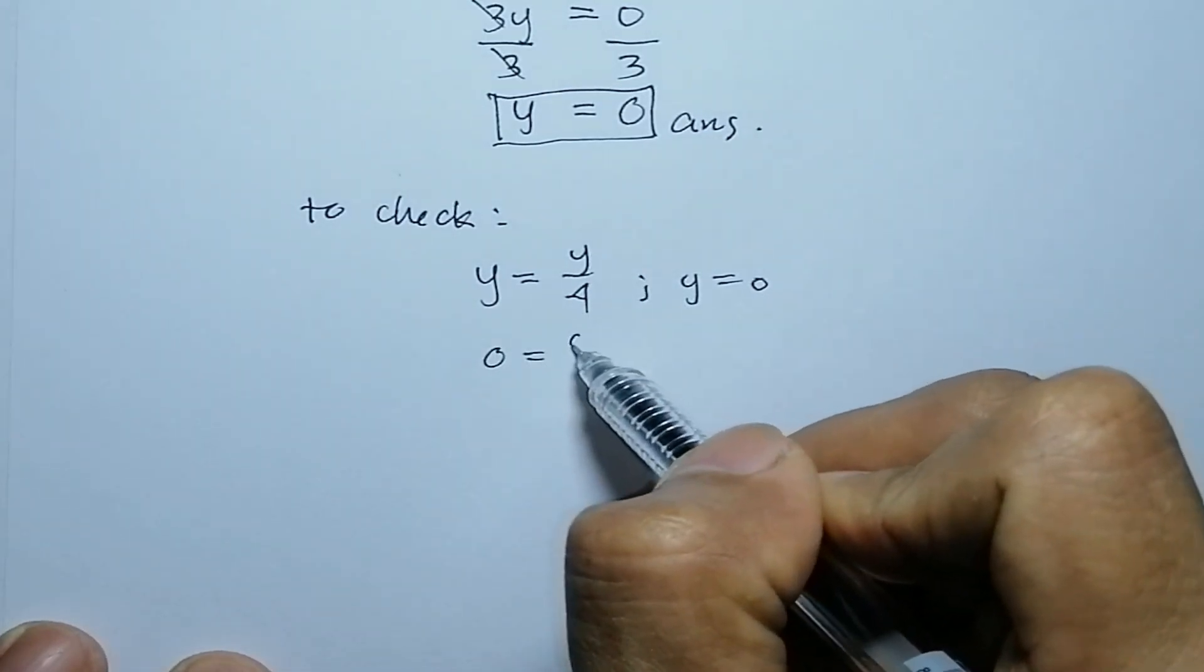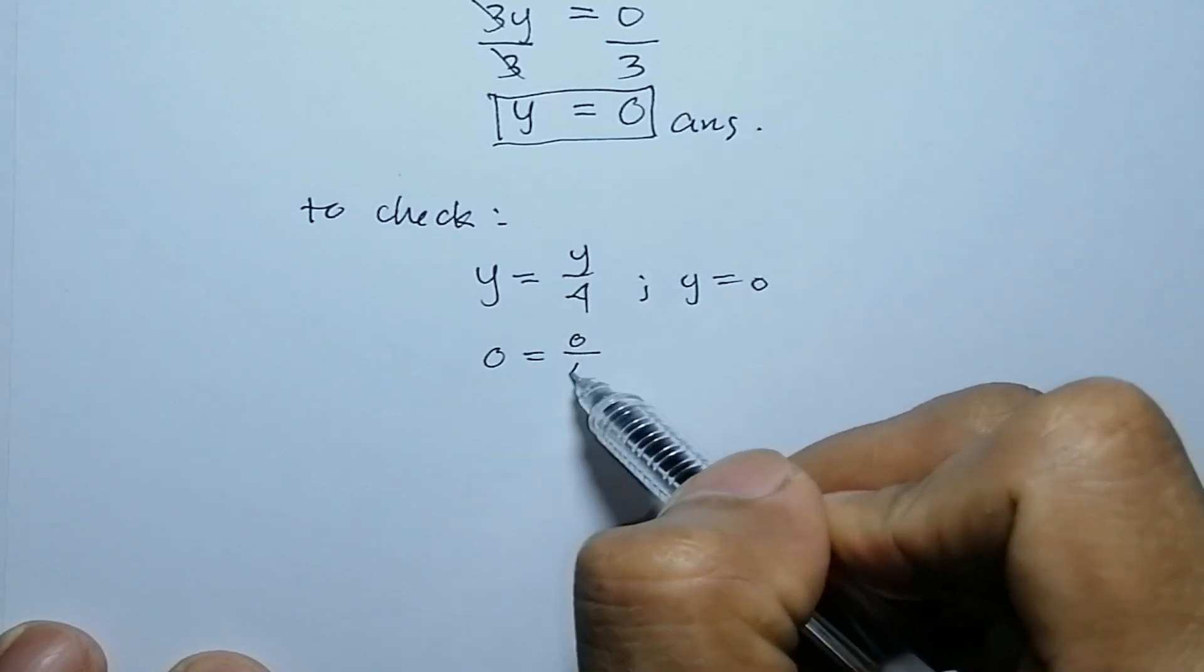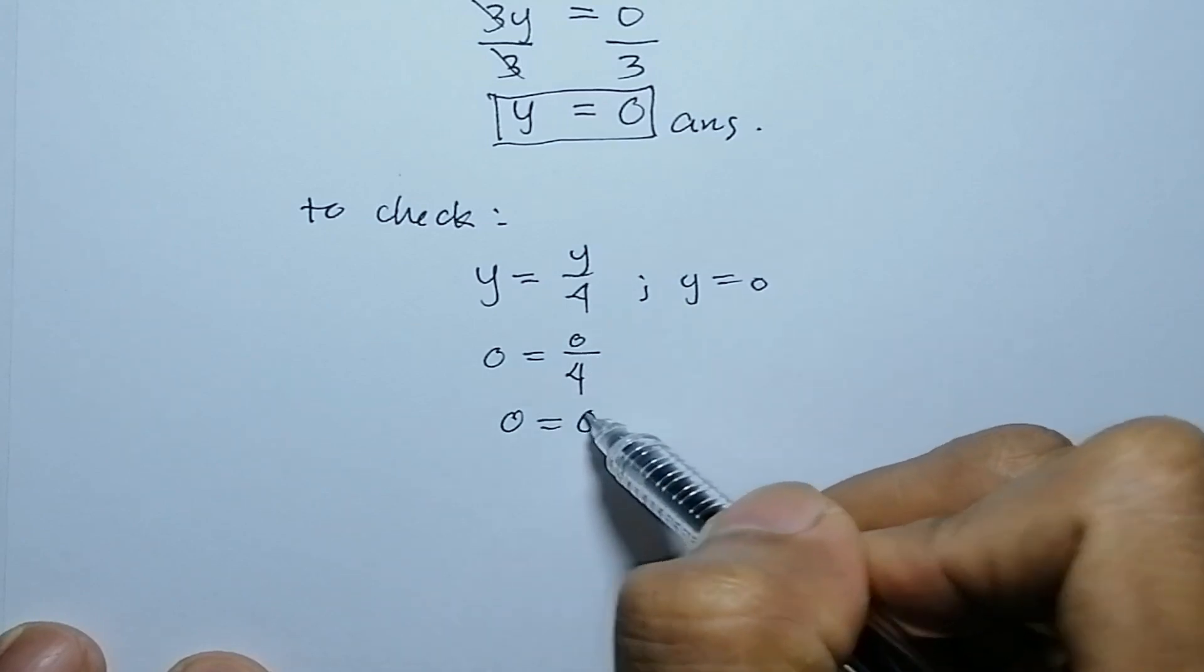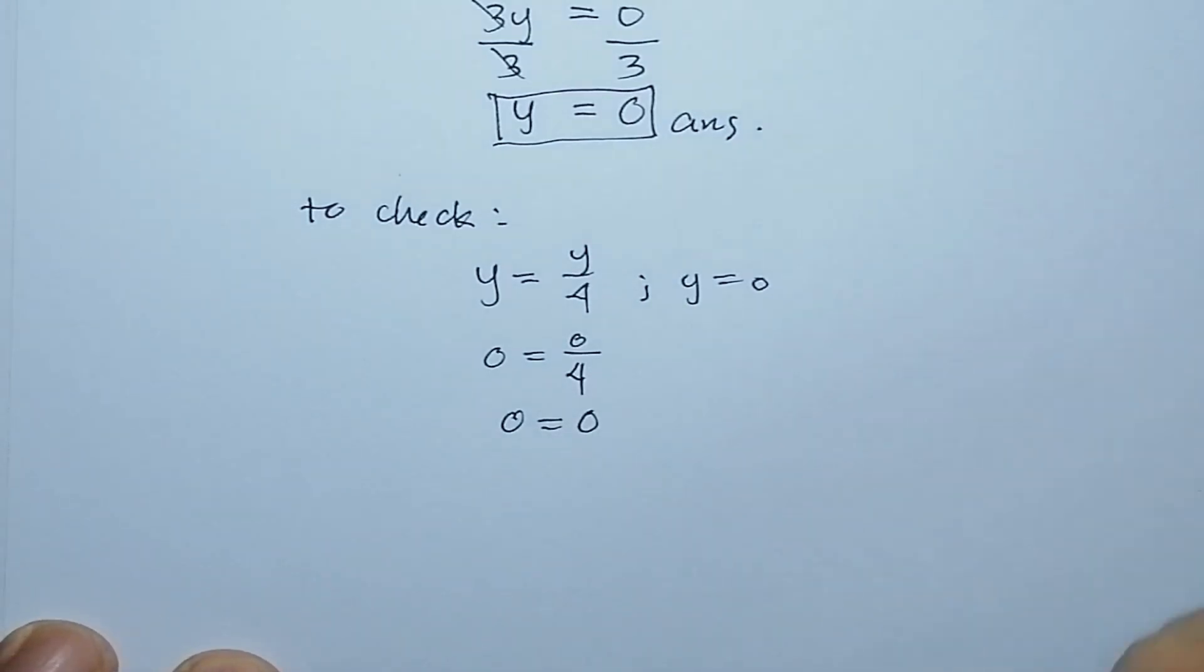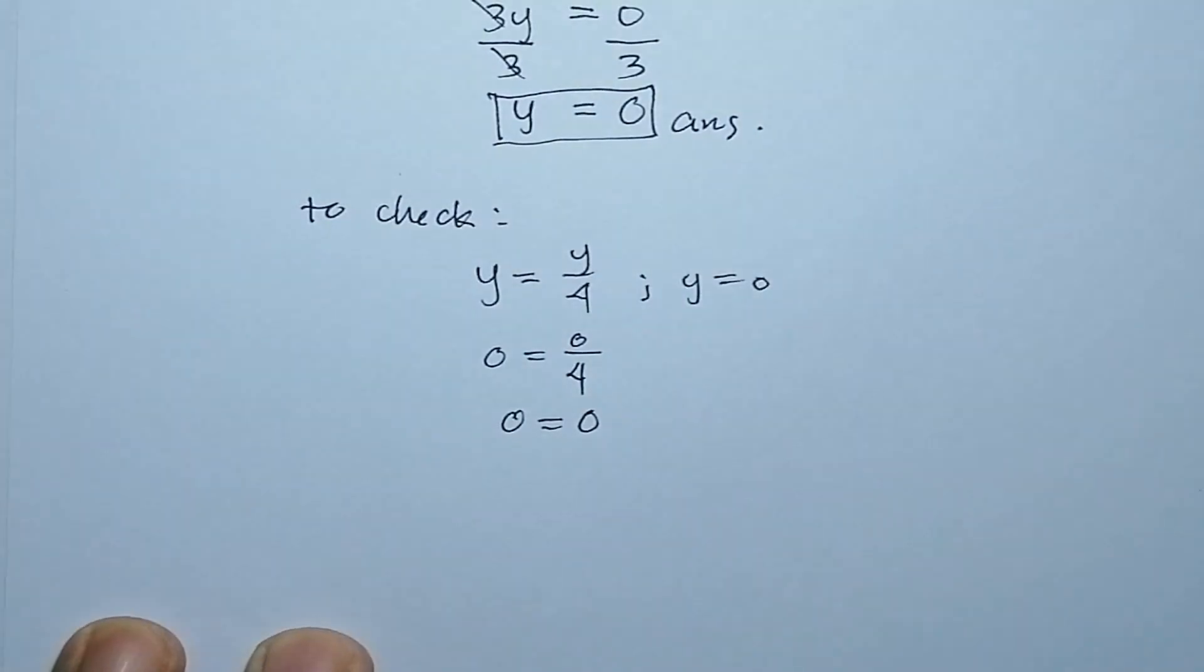0 equals 0 over 4, and 0 divided by 4 is 0. As you see, both sides are equal to 0. Meaning to say, our answer is correct: y equals 0.